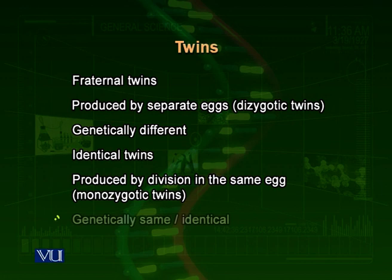Identical twins have exactly the same genetic features and exactly the same type of chromosomes, so they look just like each other. They must have the same gender — both are boys or both are girls. They are identical totally and thoroughly in their genetic characteristics.